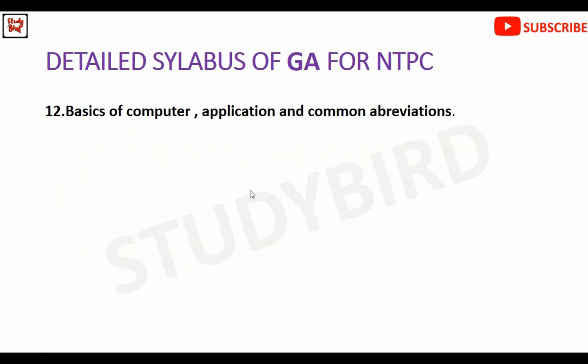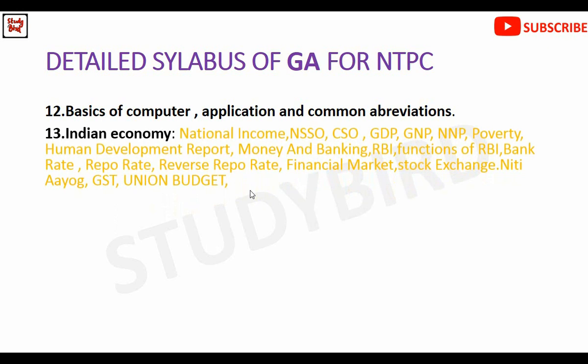You will also read about computer applications and common abbreviations — computer-related software, hardware, and system software. For Indian economy: national income, NSSO, CSO, GDP, GNP, NNP, poverty, human development report, money and banking, bank rate, repo rate, financial market, capital market, stock exchange, GST, and the Union Budget.